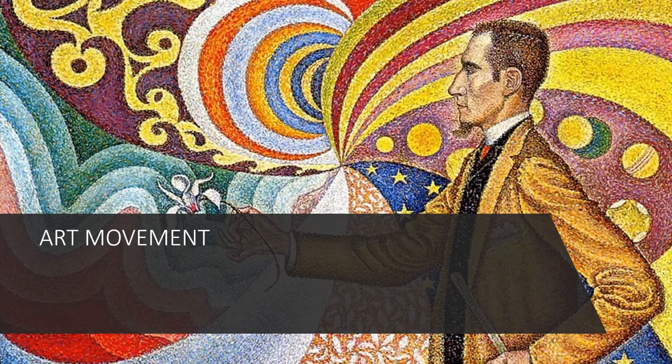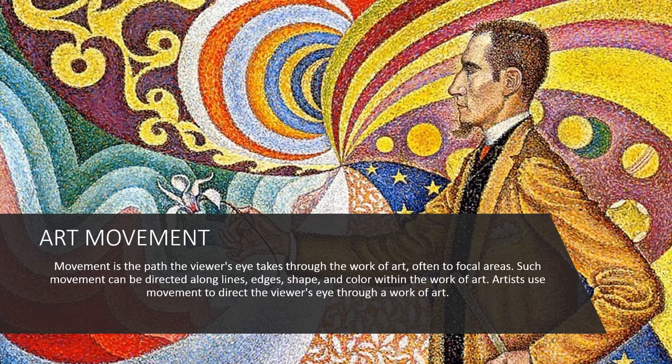Let's now proceed to our next lesson: Art Movement. Art Movement is the path the viewer's eye takes through a work of art, often to focal areas. Such movement can be directed along lines, edges, shapes, and color within the work of art. Artists use movement to direct the viewer's eye through the work.